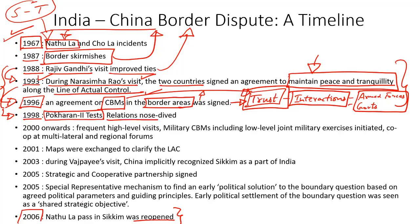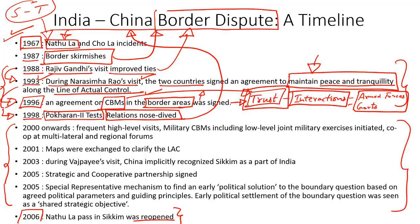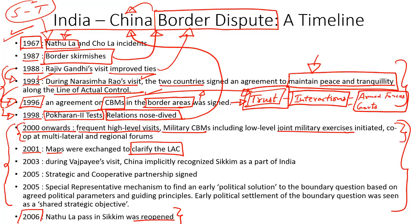In 1963, Pakistan leased the Shaqskam Valley to China, creating a nexus challenging India's claims over J&K. In 1967, a major border clash occurred at the Natula Pass, which remained closed for nearly 40 years, reopening only in 2006. In 1987, further border incursions affected diplomatic ties. Relations began improving from 1988 after Prime Minister Rajiv Gandhi's visit to China, building mutual understanding further developed during the 1993 visit of Prime Minister Narasimha Rao to China.